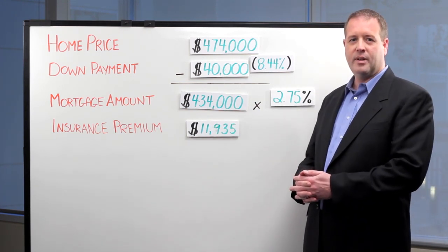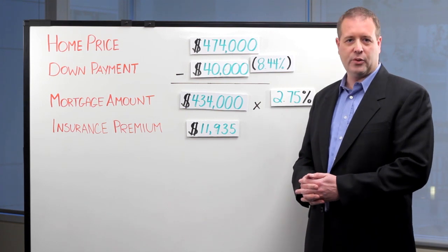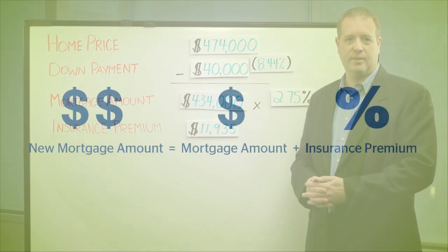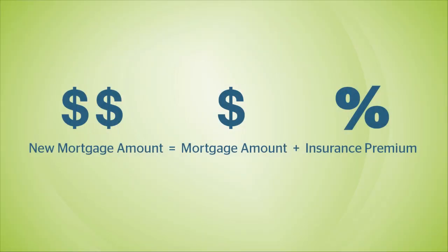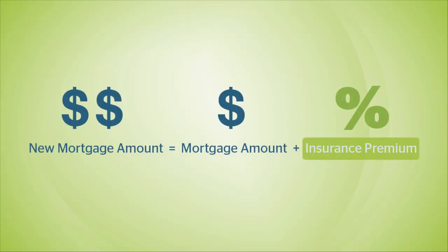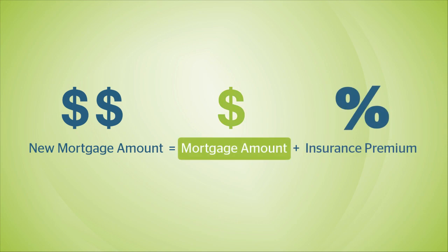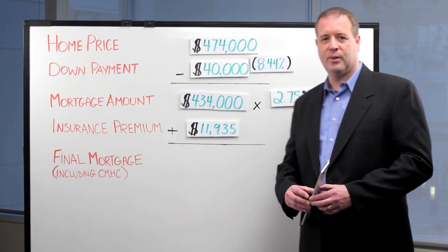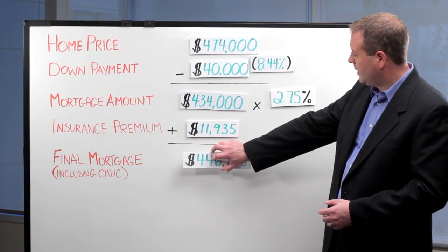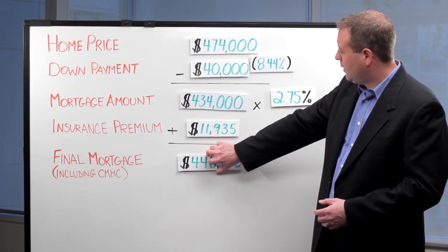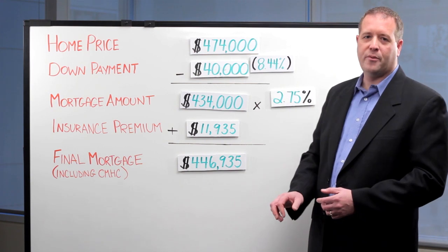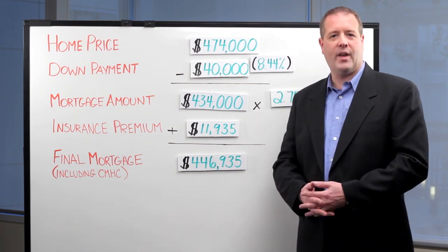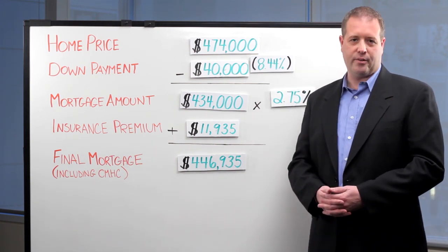Our last step is calculating your total mortgage amount. To do this, you're going to add your insurance premium to your mortgage amount. Using our example, we end up with a total mortgage amount of $446,935.